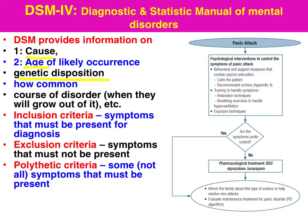How common? The most common mental conditions are anxiety disorders, affecting up to 25% of the population. The DSM also covers course of the disorder — the age when they're most likely to grow out of it, particularly for developmental disorders — as well as inclusion criteria: the symptoms that must be present for a diagnosis.